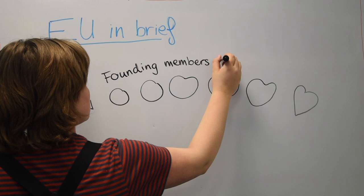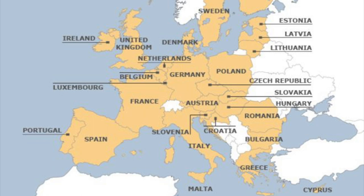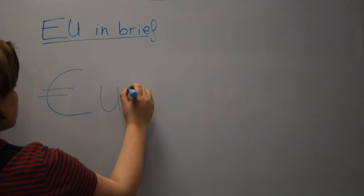There were six founding member states: France, Germany, Italy, Netherlands, Belgium, and Luxembourg. Today there are 28 member states, and some countries are still in the process of joining the EU, such as Albania or Serbia.